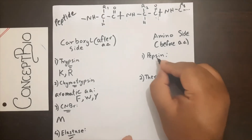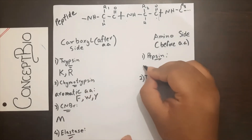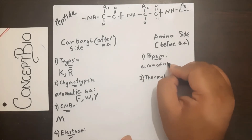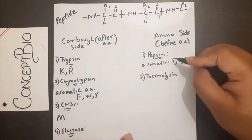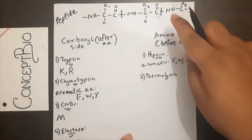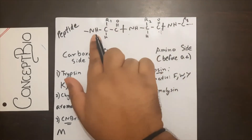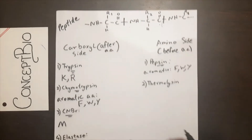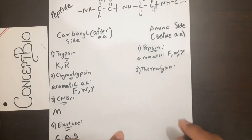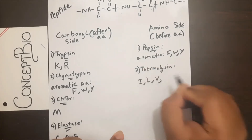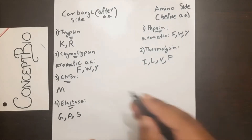Now for the amino-side proteolytic enzymes: the first and most important is pepsin. Pepsin is similar to chymotrypsin in that it targets aromatic amino acids — phenylalanine, tryptophan, and tyrosine — but the difference is that chymotrypsin cleaves on the carboxyl side while pepsin cleaves on the amino side, before the amino acid. Finally, thermolysin cleaves only when the amino group is isoleucine, leucine, valine, or phenylalanine — remember ILVF.